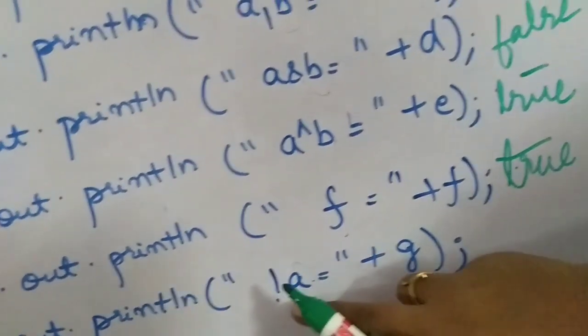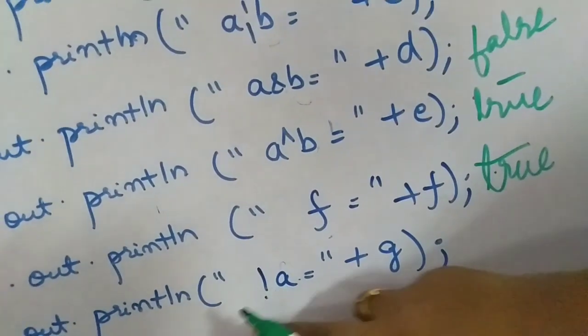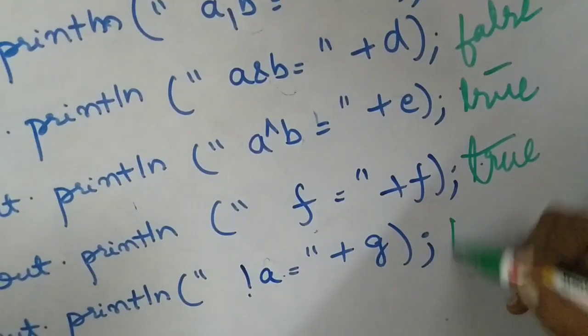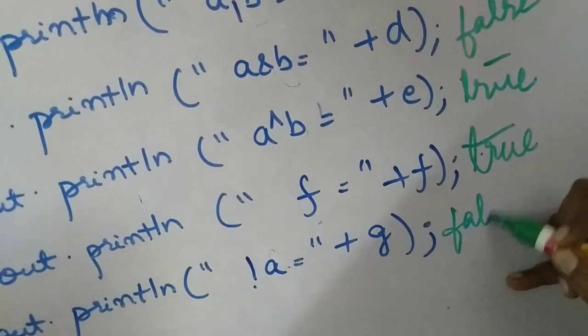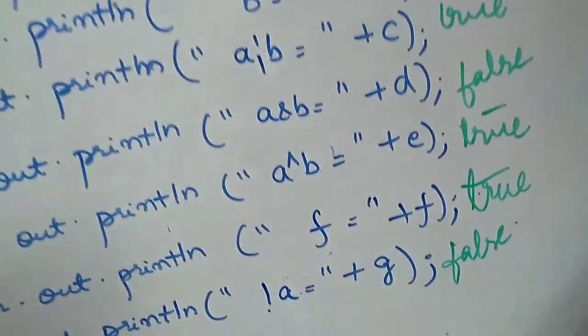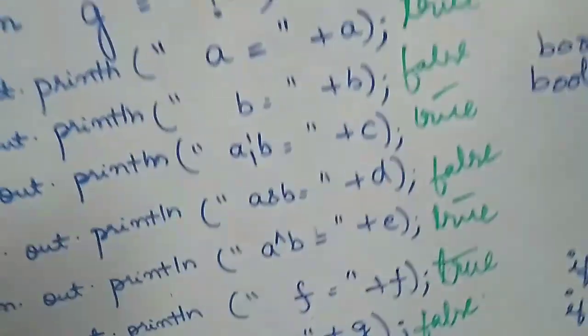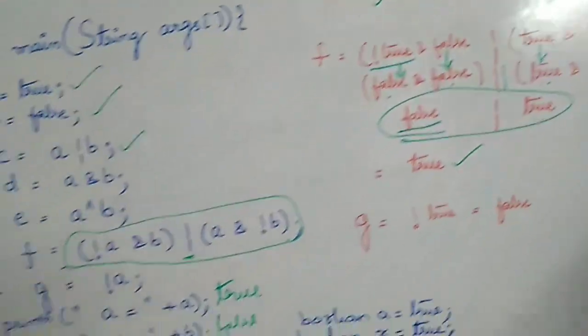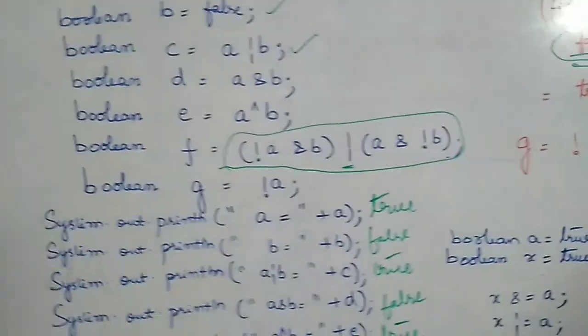For G's value, it is NOT A. A is true, so NOT A means it is false. G's value will be false. This is a simple program that explains all these operations.